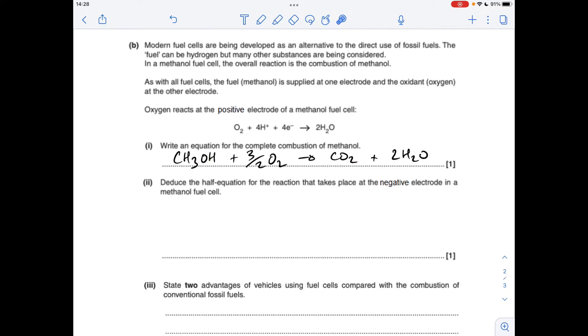Moving on to the next part, we've got to deduce the half equation for the other half cell. So we know that the overall reaction is the combustion of methanol, and we're told that this is happening at one of the electrodes, the positive electrode. So we know that the oxygen and H2O part of the overall equation is covered, so the other process that's taking place must be the methanol to CO2 part. So that's my start point: CH3OH, leave some space, going to CO2.